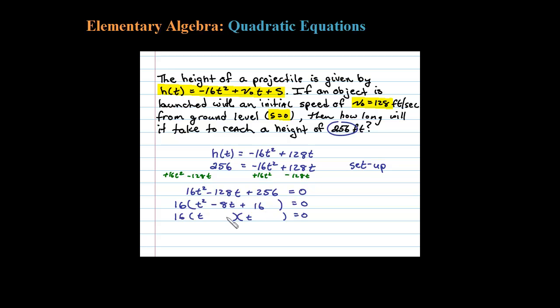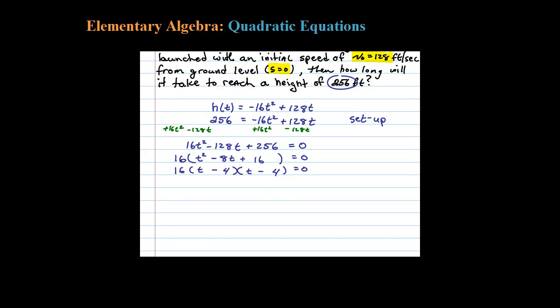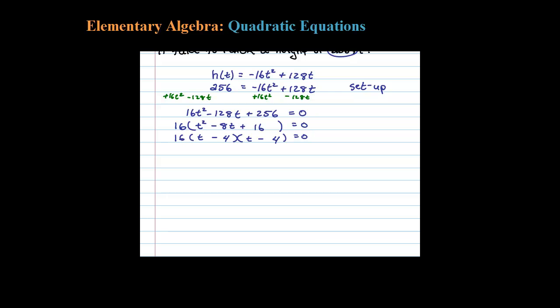16 factors as 4 times 4, and then 4 and 4 add up to negative 8 if they're both negative. Negative 4 times negative 4 is positive 16. Then set each variable factor equal to 0, so t minus 4 equals 0 or t minus 4 equals 0. So that tells me t equals 4. It occurs twice.